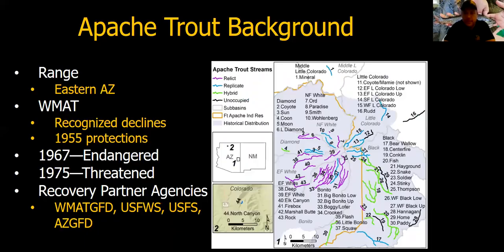The Apache trout is found only in the waters of the White Mountains in eastern Arizona. In 1955, the White Mountain Apache Tribe was the first group to recognize the declines in Apache trout populations, implement policy, and work toward Apache trout conservation by closing its habitat to fishing on their lands. The Apache trout was listed as endangered in 1967, then downlisted to threatened in 1975 due to the discovery of additional populations, successful captive culturing, removal of over-exploitation as a threat, and reduction of logging and hybridization as threats.